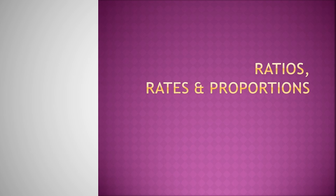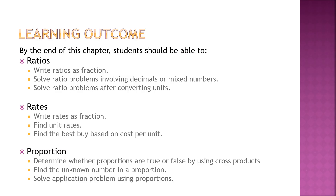The final video for this chapter will be on proportion. Let's look at your learning outcomes for proportion. You need to determine whether a proportion is true or false by using cross-multiply. You've done cross-multiplying in Chapter 2. Find the unknown number in a proportion — also covered a little in Chapter 2. And solve application problems.